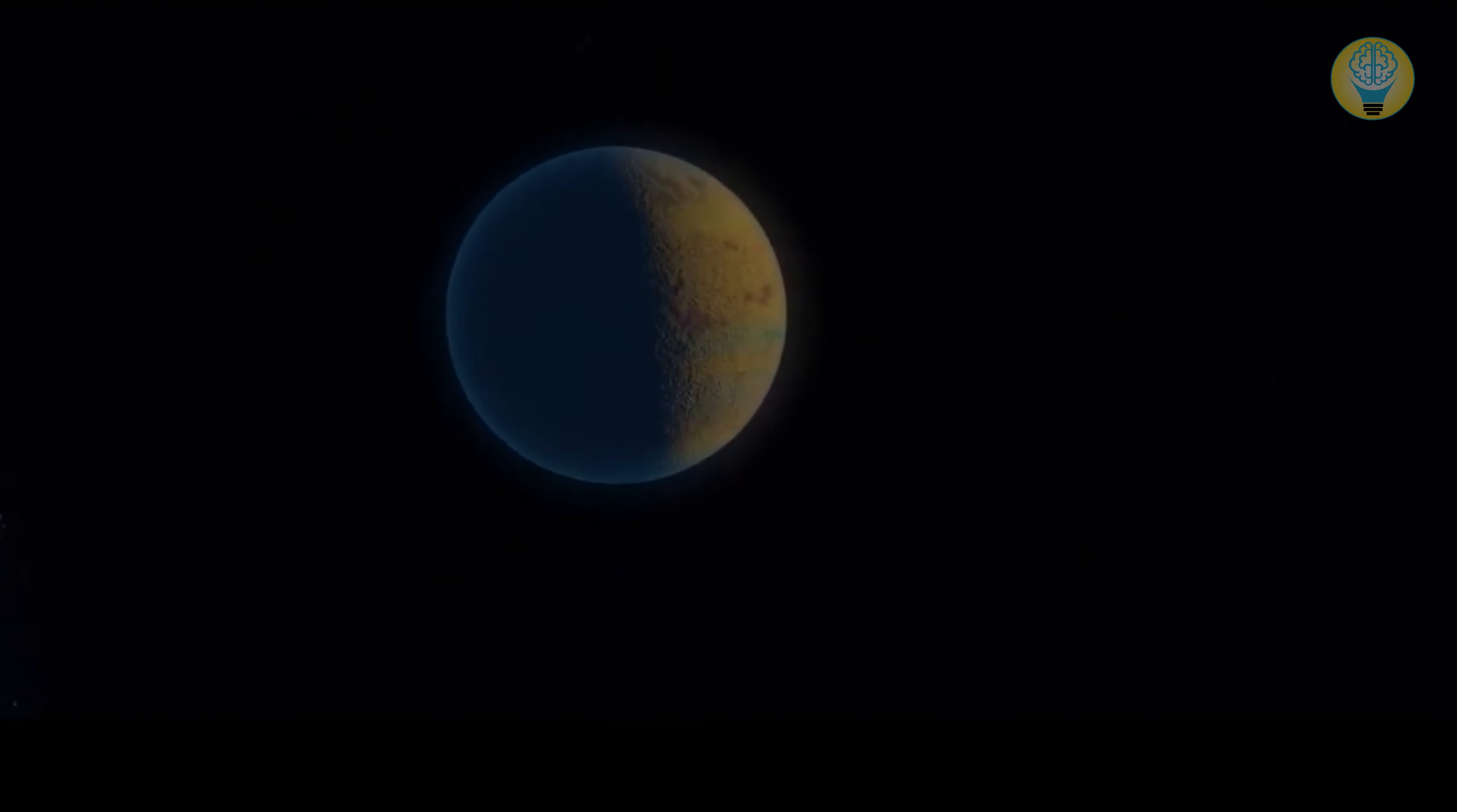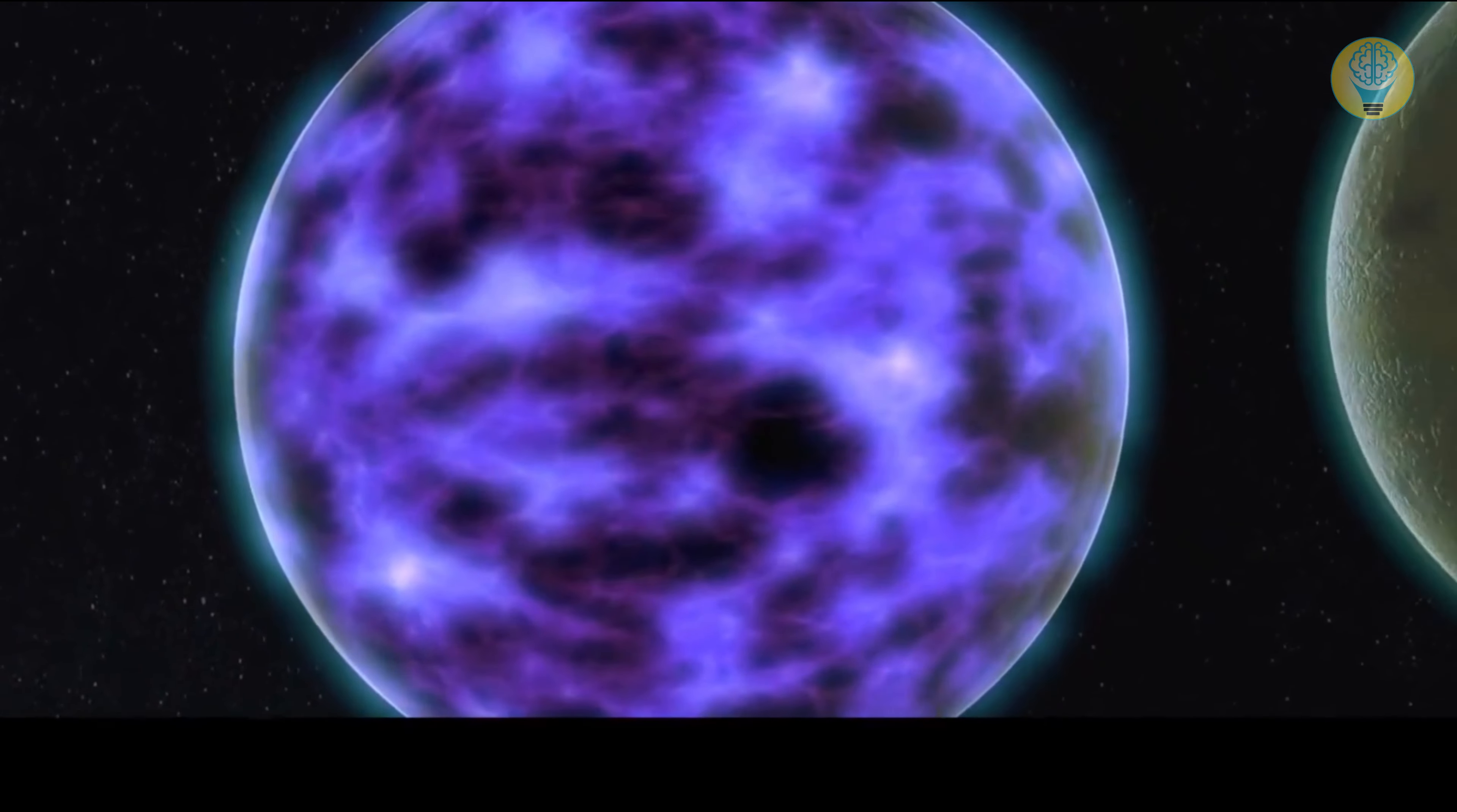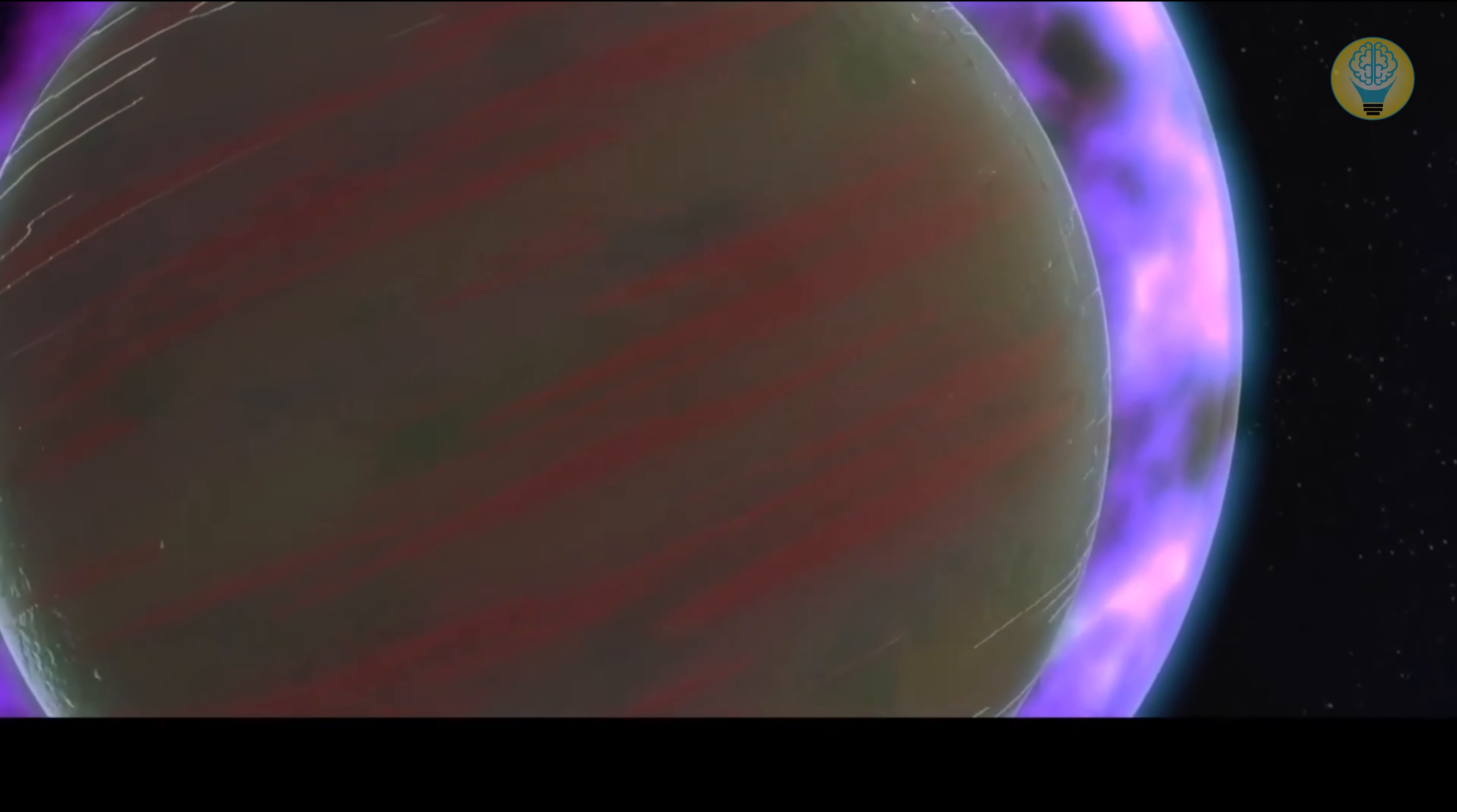Take one of them, for example, dubbed TOI-2337b. Its orbit will likely send it hurtling straight into the fiery arms of its host star in less than one million years. Well, I won't be around then. As these stars enter their final days, they're pulling in nearby planets like a black hole, altering their orbits and potentially causing catastrophic collisions.